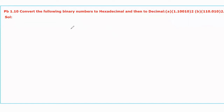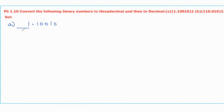Hello guys. In this video I will explain the solution for the given problem: convert the following binary numbers to hexadecimal and then to decimal. Now let us take the first number, that is 1.10010. This is a binary floating number having two parts. Before the decimal point we call it the integer part; after the decimal point we call it the fractional part.